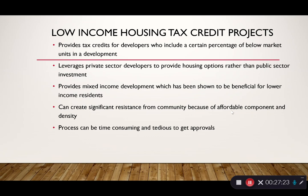Low-income housing tax credit (LIHTC) projects encourage private developers to include low-income units in their developments. For example, a developer building a 100-unit complex might set aside 20 units for affordable renters in exchange for federal tax credits. It's a complex process but an effective way to provide affordable housing. The benefit is that affordable housing isn't segregated into its own area concentrating poverty — it's mixed with market-rate units, creating mixed-income neighborhoods.